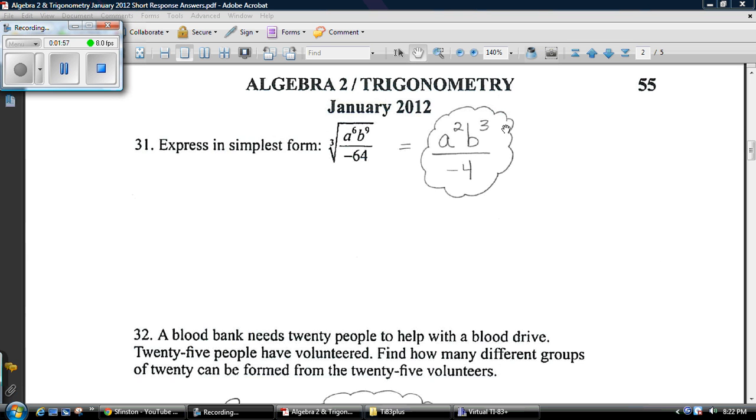31. This is a perfect cube. There's nothing more to it other than that. a² multiplied by itself 3 times is a⁶. b³ multiplied by itself 3 times is b⁹. And negative 4 multiplied by itself 3 times is negative 64.